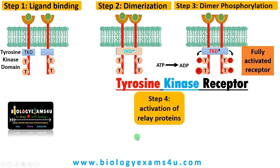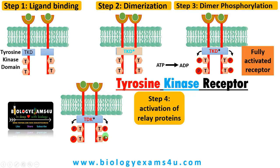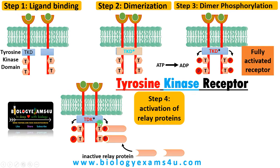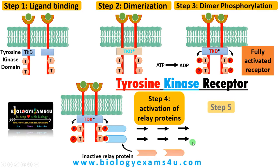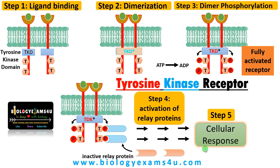Step 4 is activation of relay proteins. Upon ligand binding, the fully activated receptor phosphorylates inactive relay proteins via the phosphorylated tyrosine residues, activating them. These activated relay molecules further activate or phosphorylate many other relay and signaling molecules in a sequential manner.